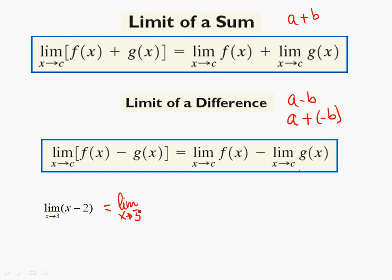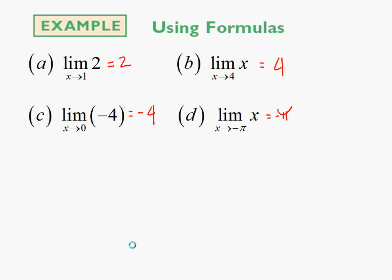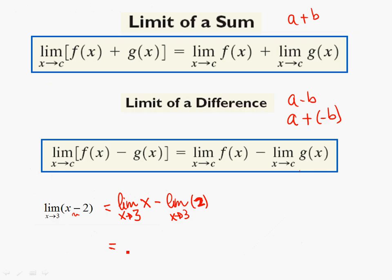This would be the same as saying the limit of x going to three for just the x, and since that says subtract, we're going to subtract from that the limit of x approaching three of positive two. Because I took care of the negative by saying subtraction. Based on the rules you just saw — the limit of a constant and the limit of x, the identity function — when x approaches three, this is going to be worth three. And this one, when x approaches three, gives three minus two, which is one.